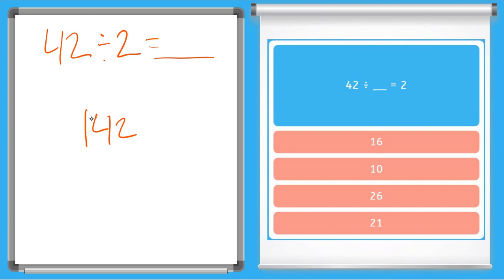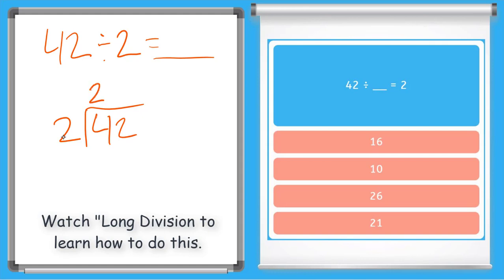42 ÷ 2. Okay, so 2 goes into 4 twice. 2 × 2 is 4. Let me subtract, is zero. I will bring down my 2. 2 goes into 2 one time, and that is my final answer, 21.